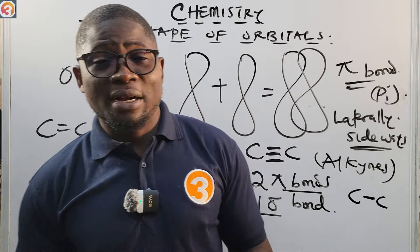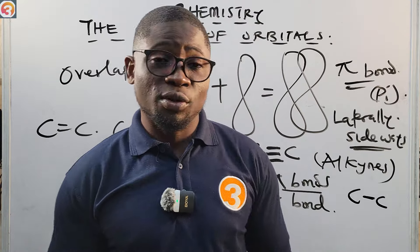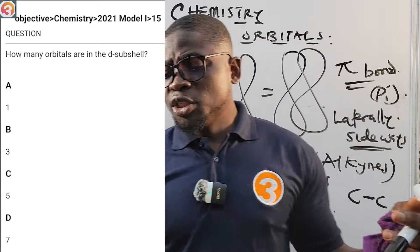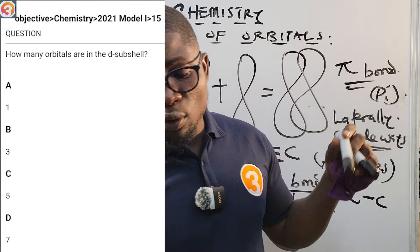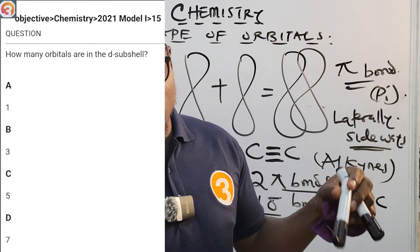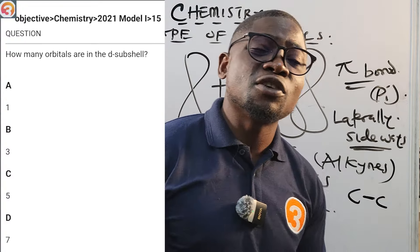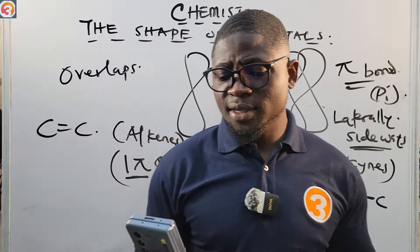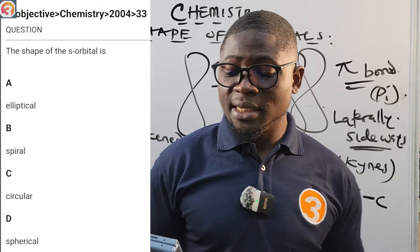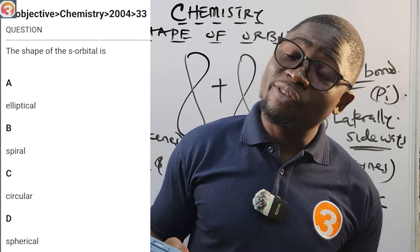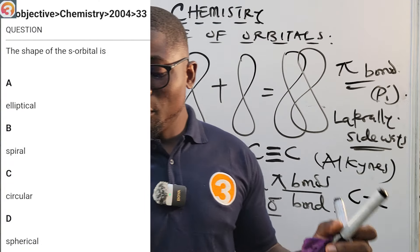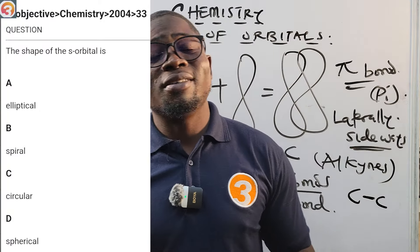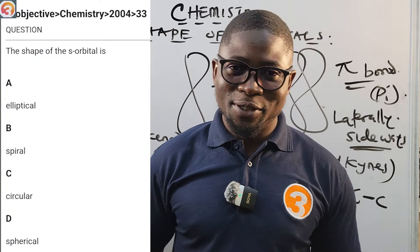That is where we close for this class. In the next episode, we will continue our study of organic chemistry. Let's quickly answer the practice question: 2021 question 15 — how many orbitals are in the D subshell? The answer is C: 5. Also, 2004 question 33 — the shape of the S orbital is spherical. Go download the O3Schools app and practice your way to success. My name is Master T, your Grand Commander. See you in the next episode!